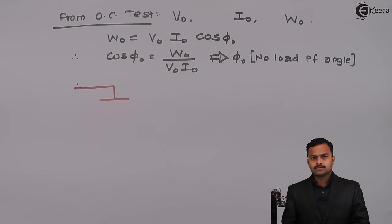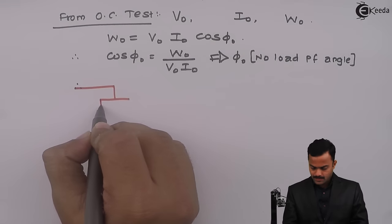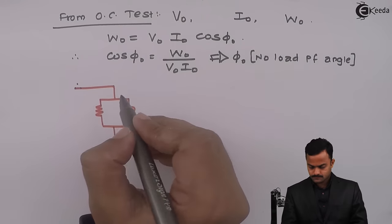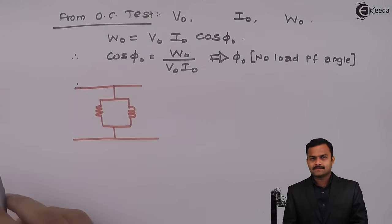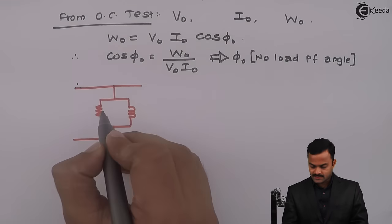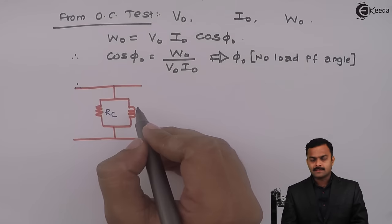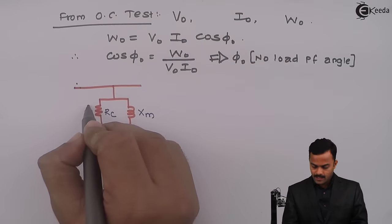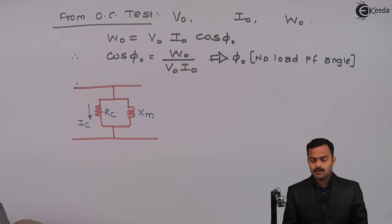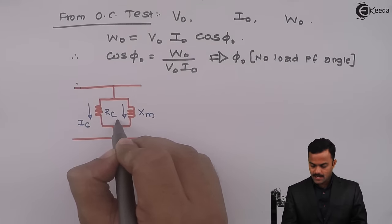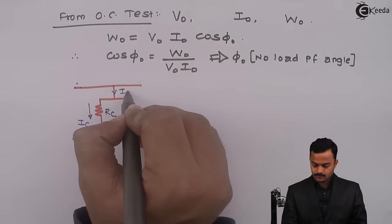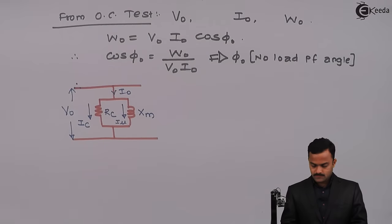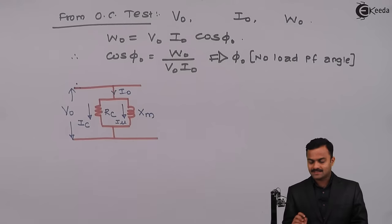The equivalent circuit at no load has a parallel combination of one resistance and one inductance. The resistance is called core loss resistance RC, and the inductance's reactance is the magnetizing reactance XM. The current carried by RC is the core loss component of I0, denoted IC, and the current carried by XM is Iμ, the magnetizing component of I0. The no-load voltage across them is V0. The objective of the OC test is to get the values of RC and XM.